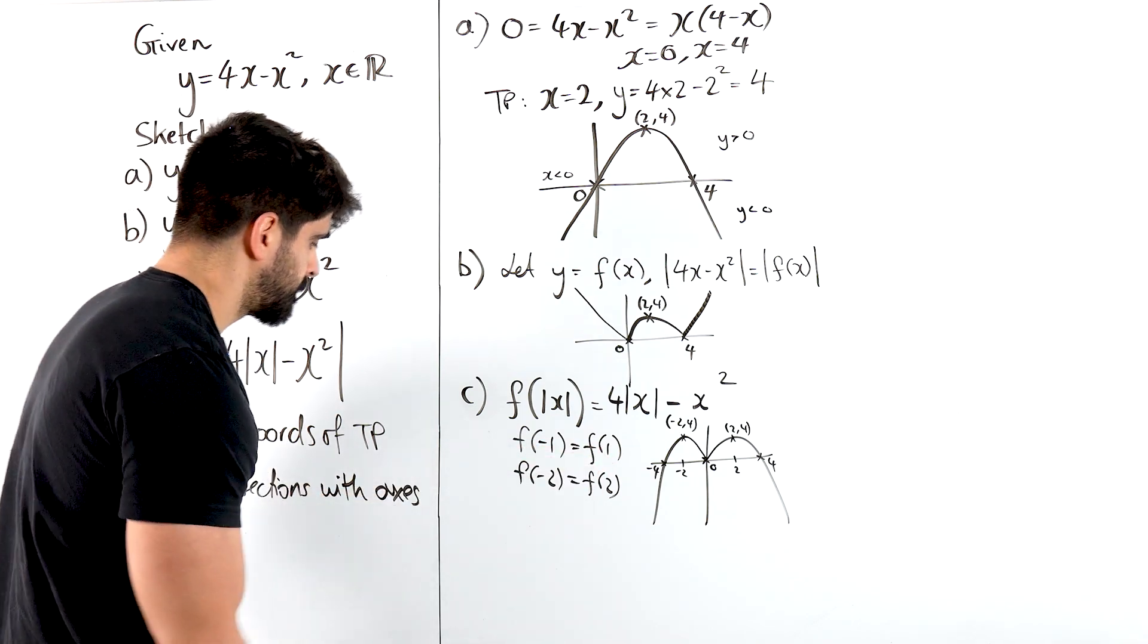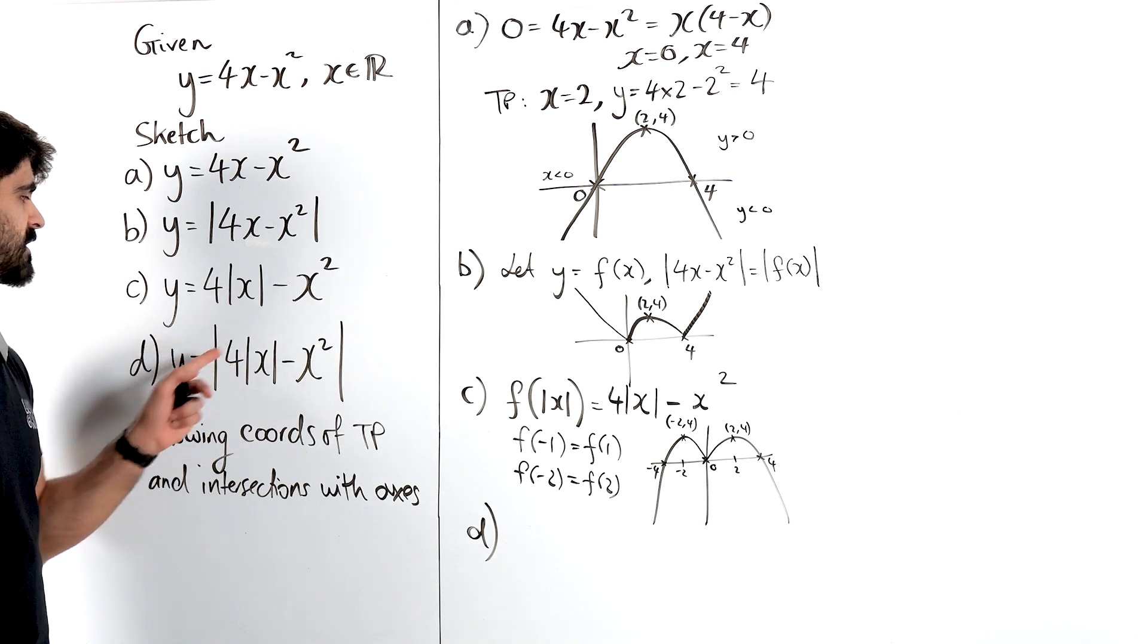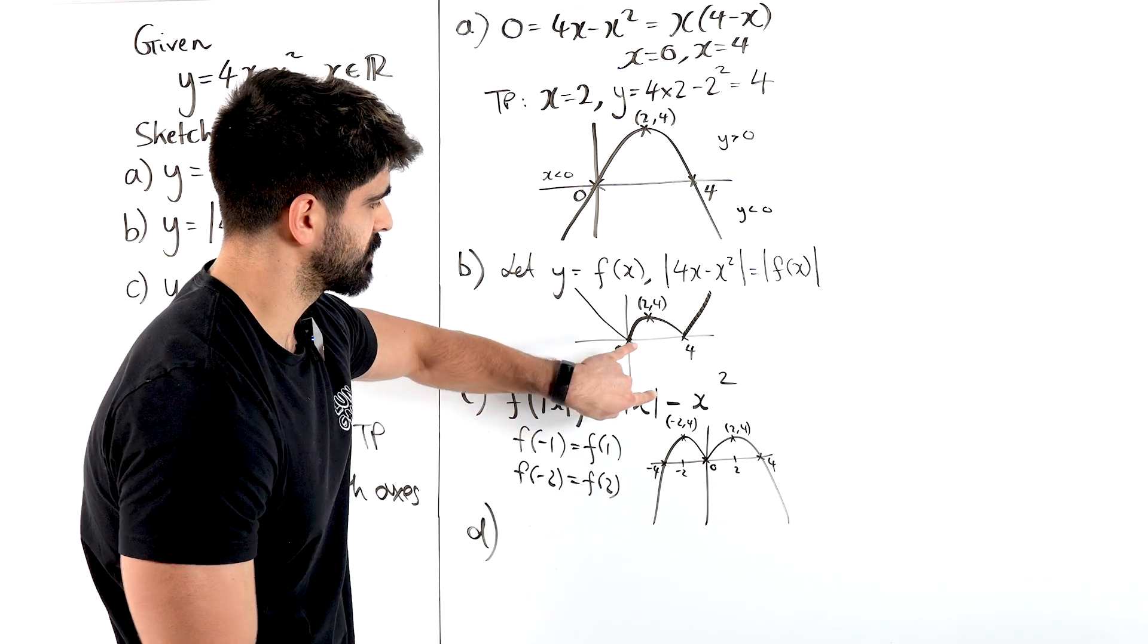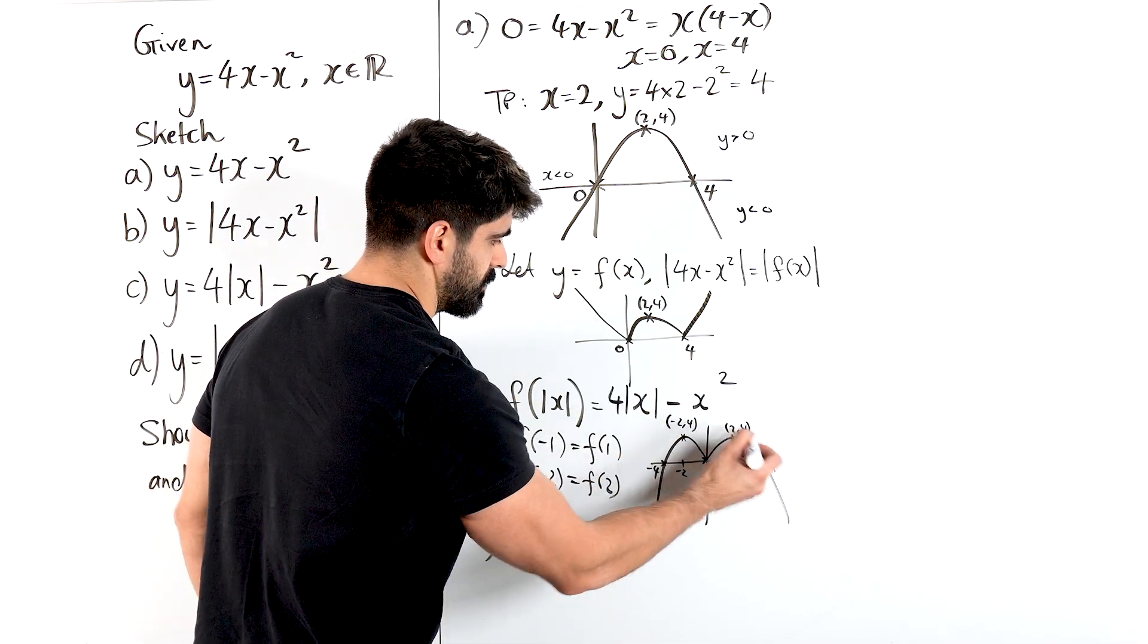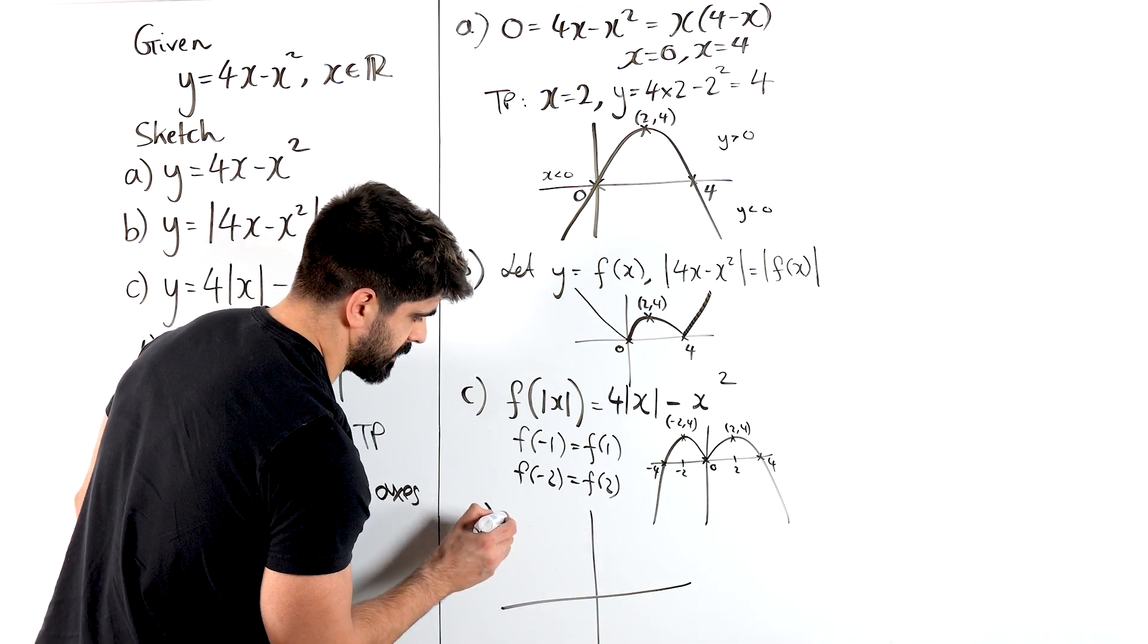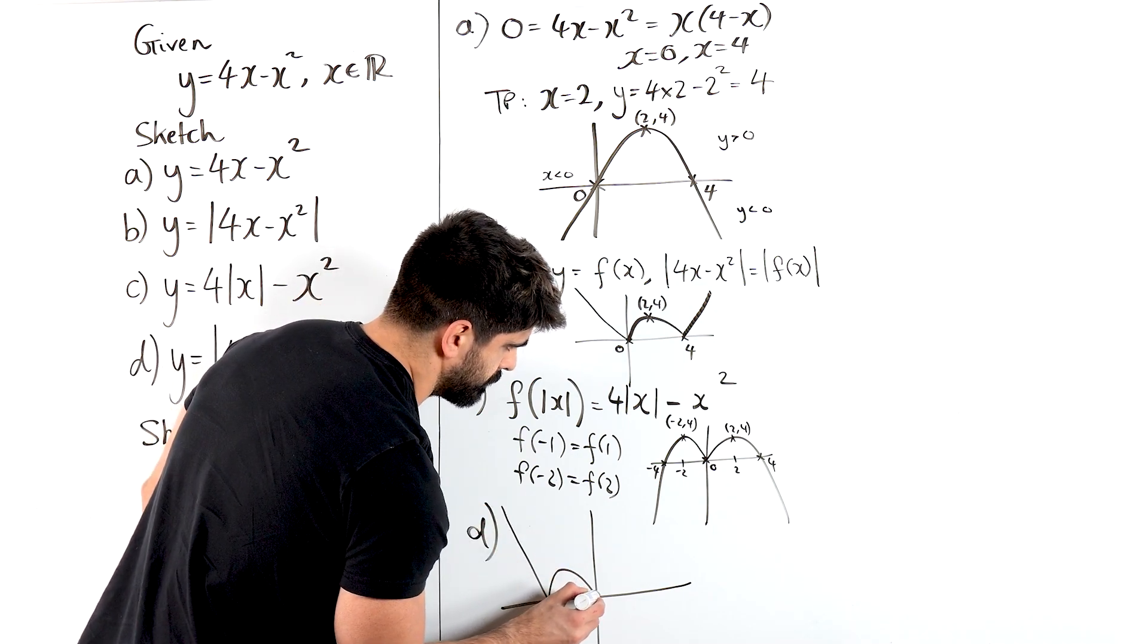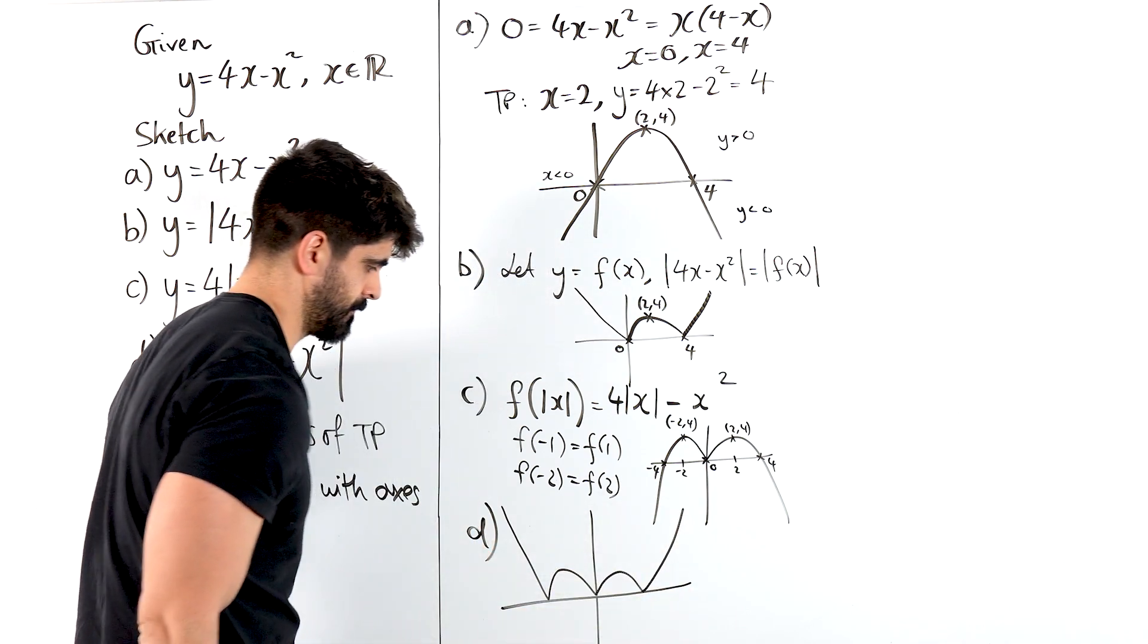Then finally, what happens when we have this which is this and put a modulus around it? The exact same thing. All this negative side is just going to reflect up, reflect up. So it's going to come down, M, up. So it's going to come down, boom, boom, up.